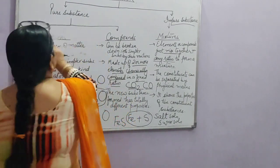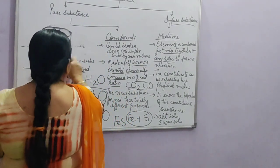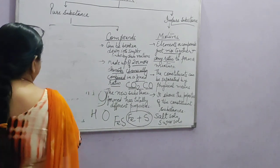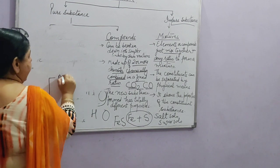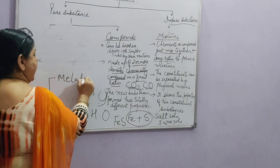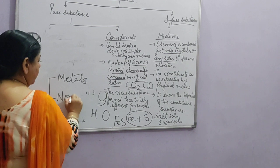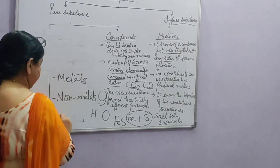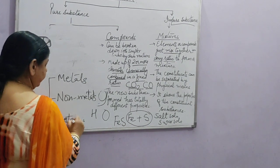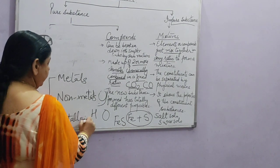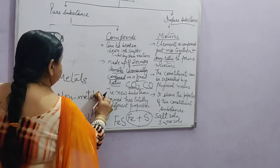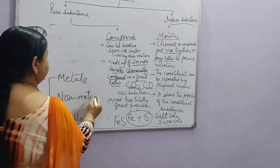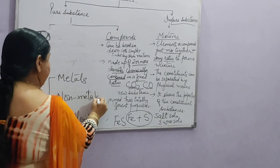Now, one more thing: elements are further classified as metals, non-metals, and metalloids. So elements are of three types.